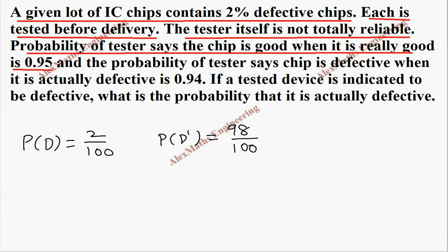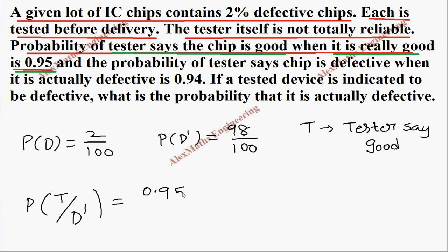Let's take P of the tester. The probability of tester says the chip is good when it is really good, so we are going to express this as P of... good means not defective, and the tester says it is good. So let us take T as tester says good. So when it is good and tester says good is P of T by D dash, and its probability is 0.95.